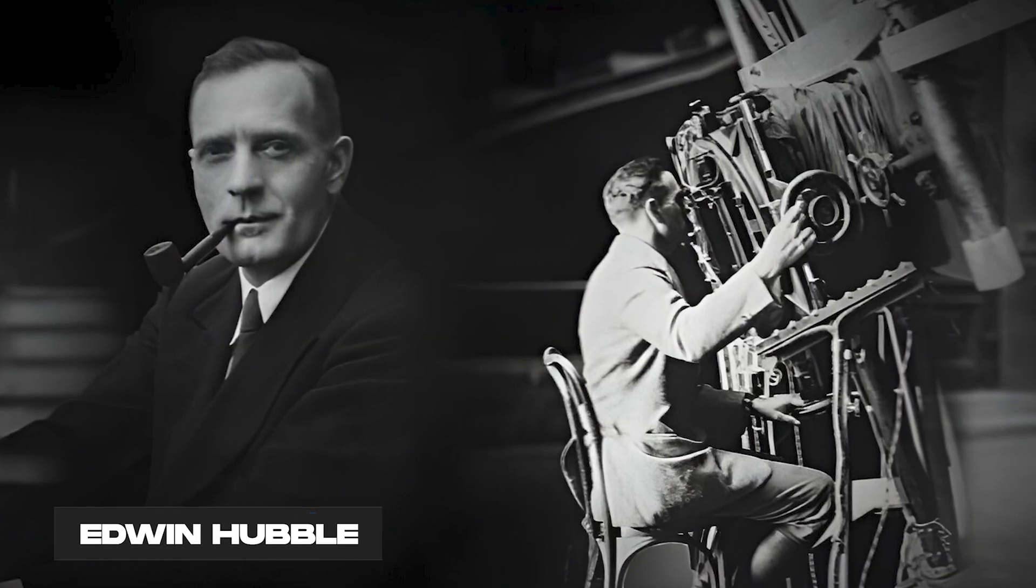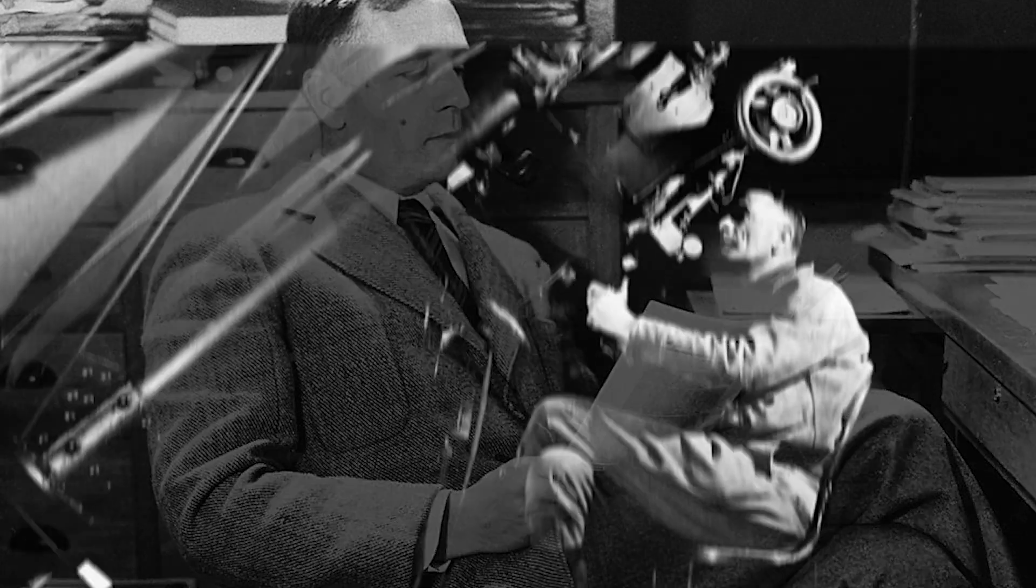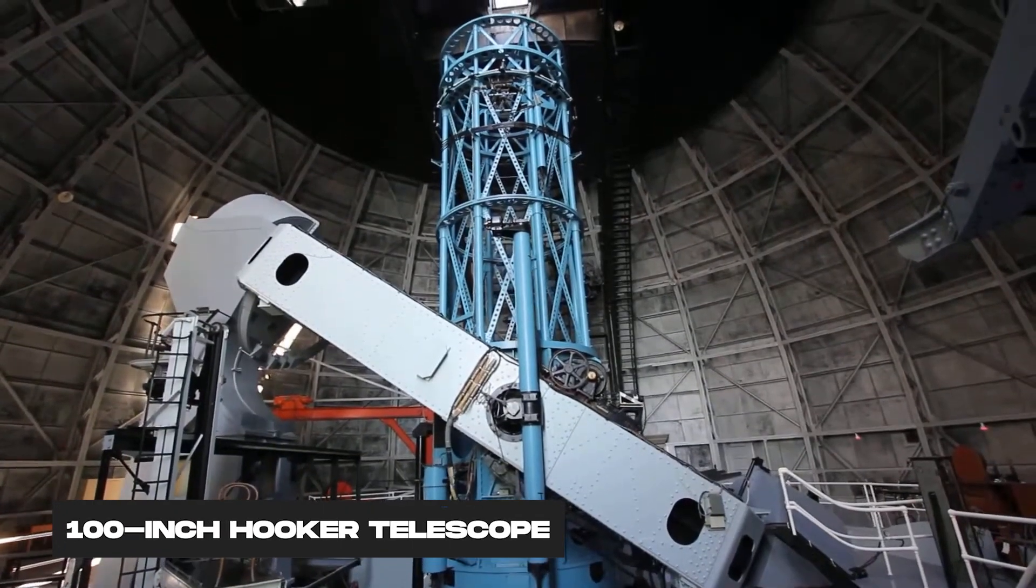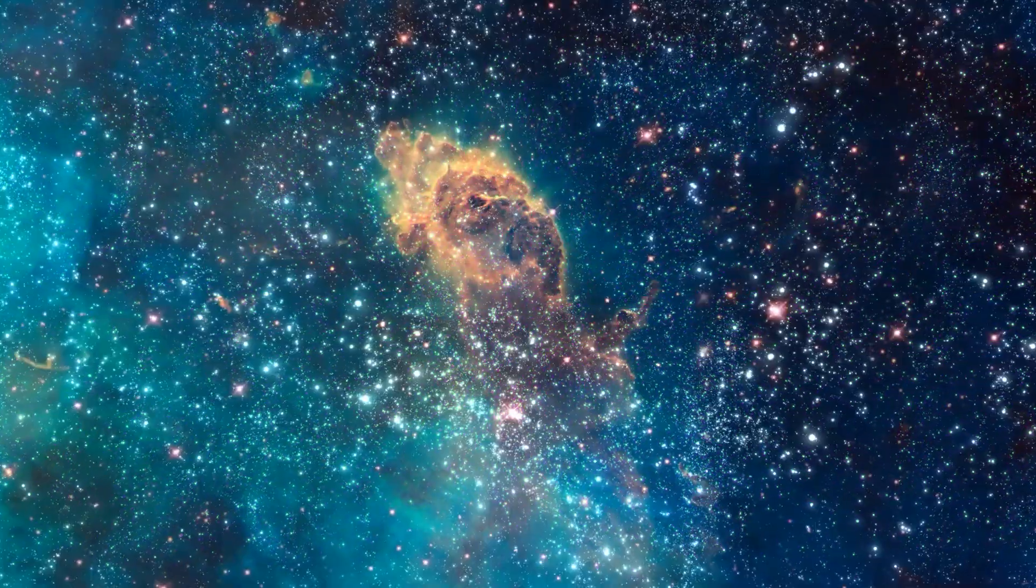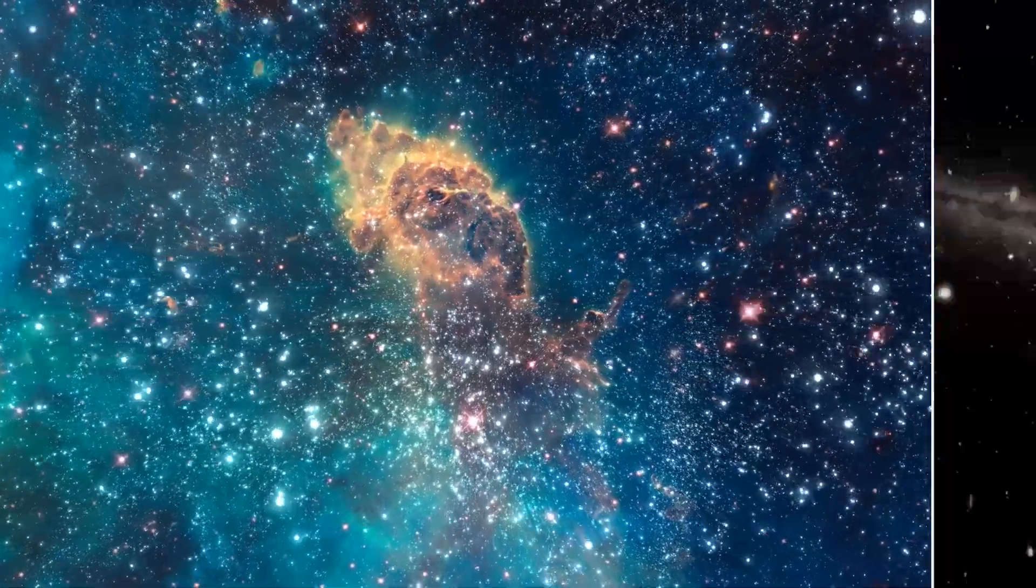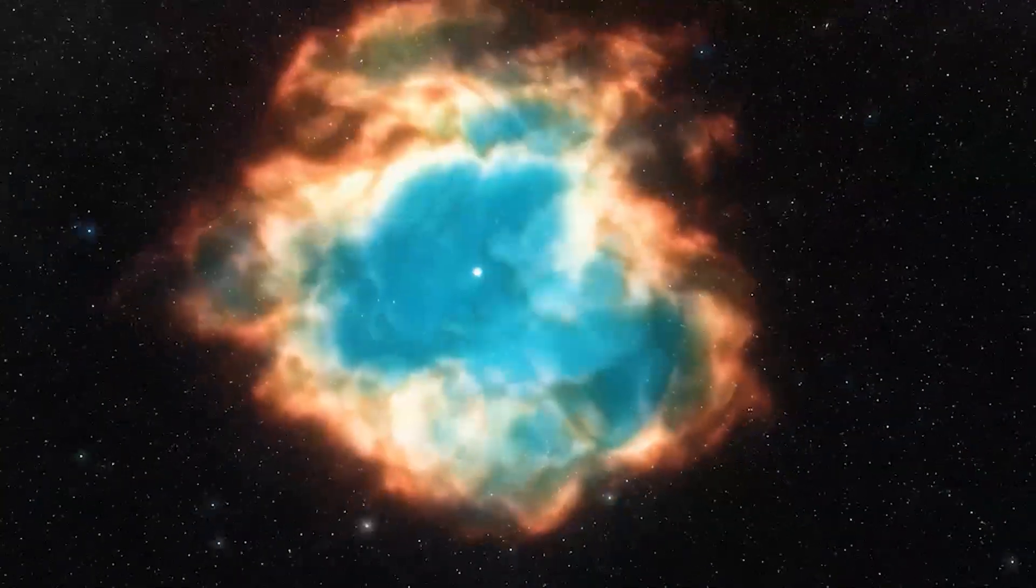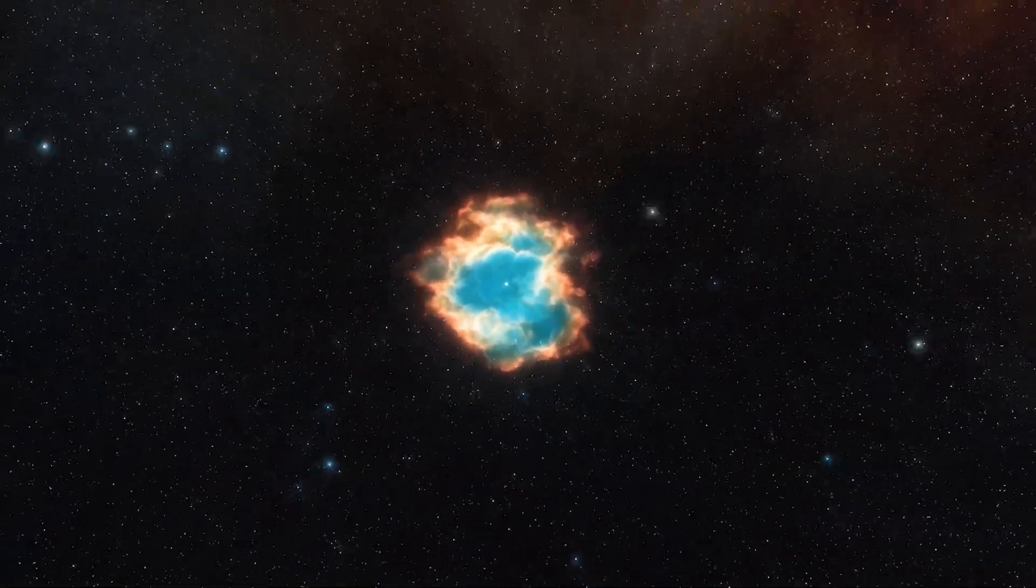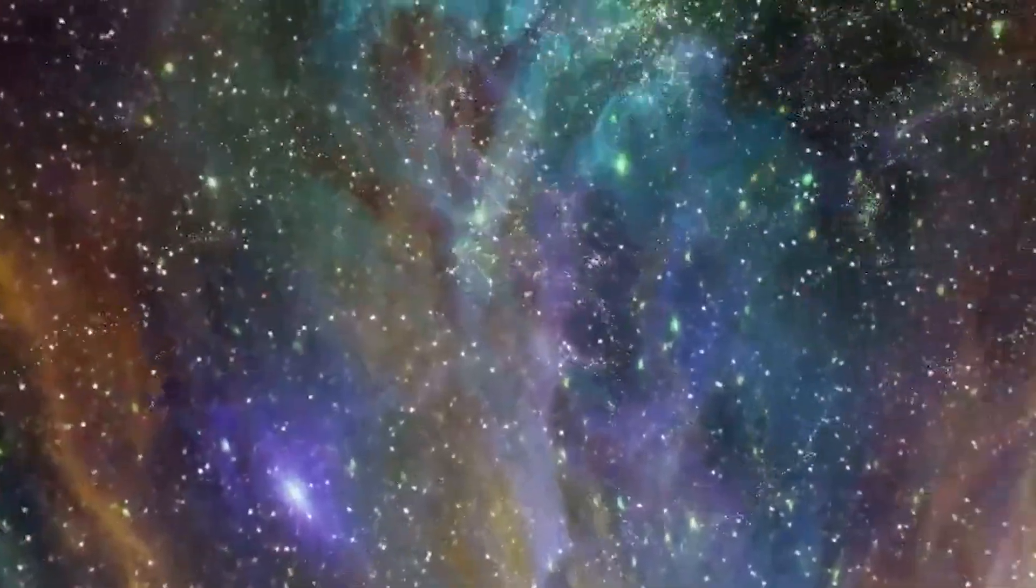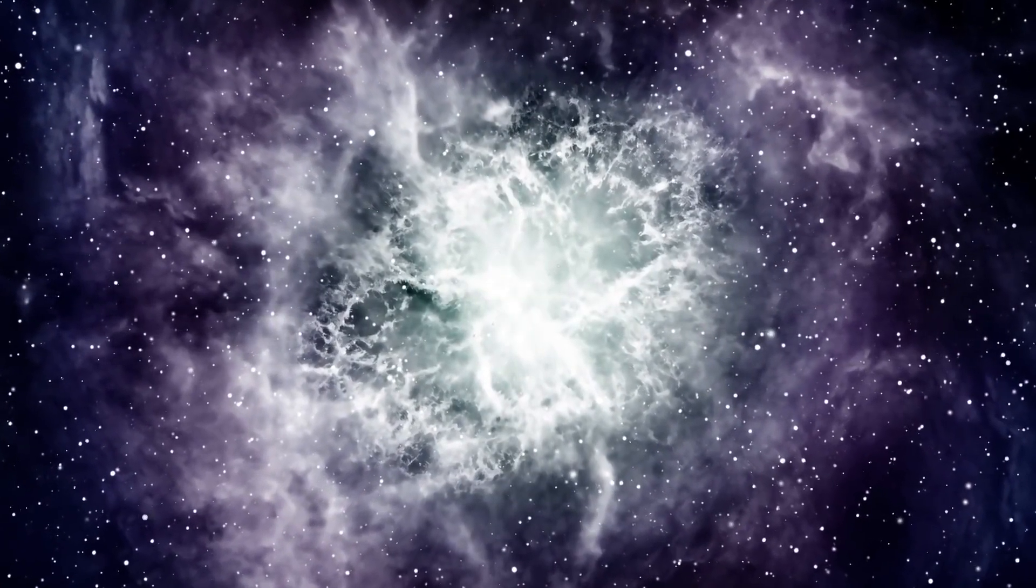But then came Edwin Hubble, the man who rocked our cosmic worldview. He was an American astronomer who had access to the coolest toy of his time, the 100-inch Hooker telescope at Mount Wilson Observatory in California. He noticed that some of the fuzzy blobs in the sky were actually galaxies like our own and that they were running away from us at different speeds. He figured out that the farther away a galaxy is, the faster it is fleeing from us. This relationship is now known as Hubble's law and it suggests that the universe is expanding.